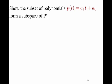Show that the subset of polynomials P(T) = A₁T + A₀ forms a subspace of Pₙ. Pₙ is just all of the polynomials of nth degree, and this is a first degree polynomial. To show that something forms a subspace, we have to show it is non-empty — clearly this is non-empty; you can think of an example like 1 + T. Then we have to show that if we take two polynomials of this form and add them together, we get a polynomial of the same form. And finally, we have to show that if you multiply a polynomial of the form A₁T + A₀ by a scalar, that new polynomial is also a first degree polynomial.